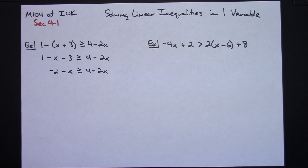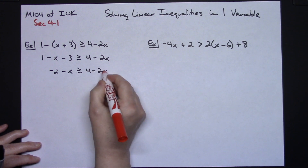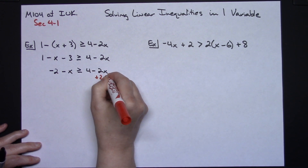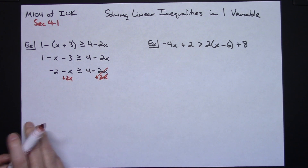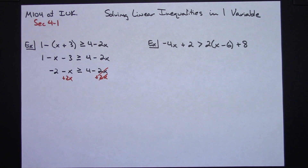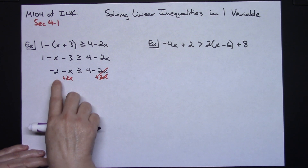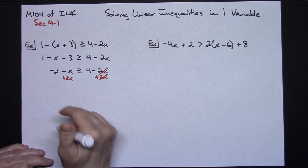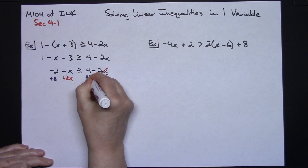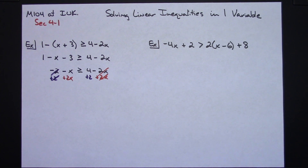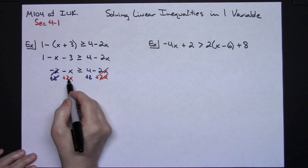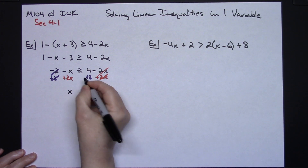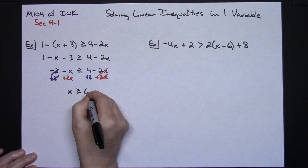At this point, you just want your x's on one side of the equation, all your numbers on the other. I usually do this all in one step. So this is minus 2x — I want to move it over, so I'm going to add 2x to both sides of the inequality. Then I need to take the negative 2 and move it to the right, so I'm going to add 2 to both sides. Negative x plus 2x gives me an x on this side, greater than or equal to 6 on this side.